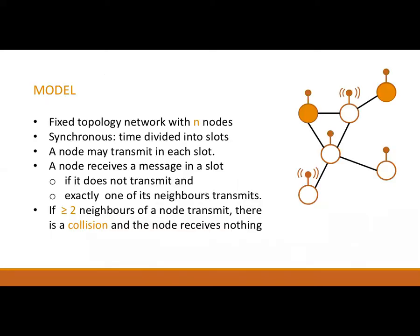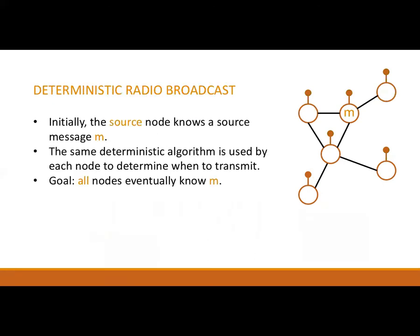Our model of computation is a fixed topology network with N nodes. It is synchronous with time divided into slots. In each time slot, a node can decide whether or not to transmit. If it does not transmit, but exactly one of its neighbours does transmit, it receives the message that neighbour sent. If two or more neighbours of the node transmit in the same slot, then the node does not receive anything. In the radio broadcast problem, the network contains one node called the source that knows a message M, and the goal is to ensure that all nodes eventually know M.